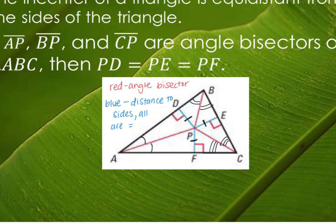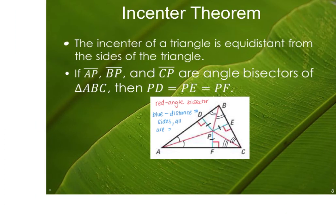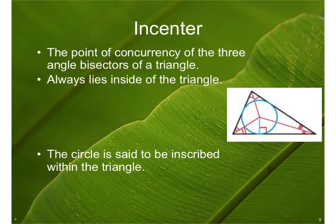The incenter will always be inside the triangle. The incenter is the point of concurrency of the three angle bisectors of a triangle — it always lies inside the triangle. The circle inscribed within the triangle is drawn using the incenter. Go ahead and put a dot at that point right in the middle and label it your incenter.